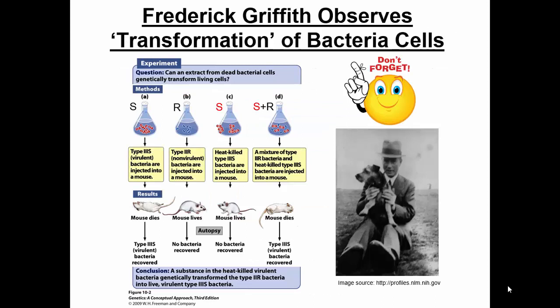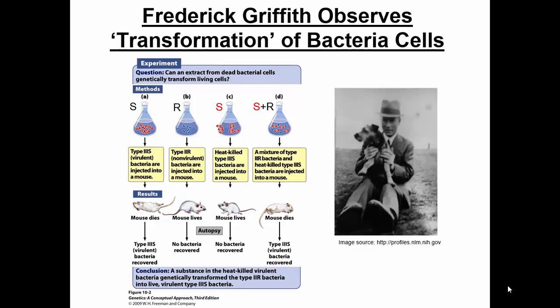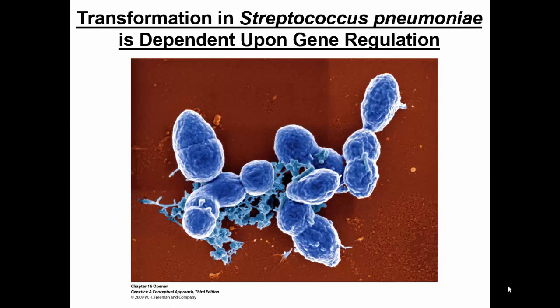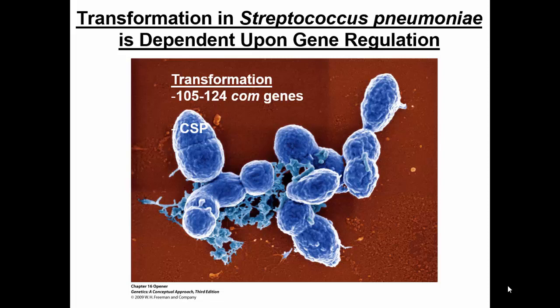I'd like to talk about Streptococcus, the same bacteria that Griffith used. Streptococcus pneumoniae has many genes that are dependent upon gene regulation. The act of these bacteria being transformed — in other words, taking up DNA, the exact same thing that Griffith showed — does require gene expression and control of gene expression. There are some genes called competent-stimulating peptide, or COM, genes.